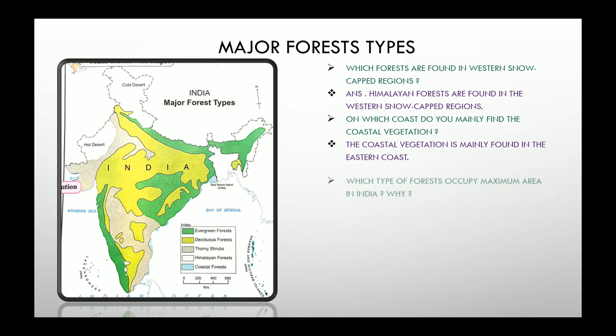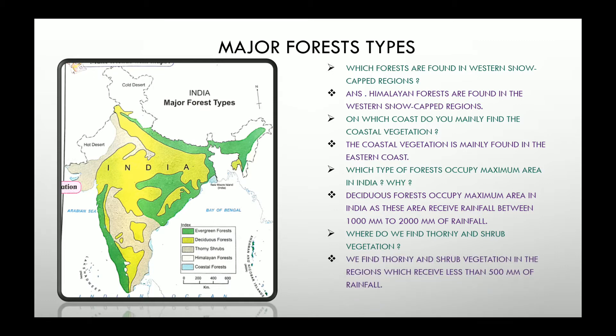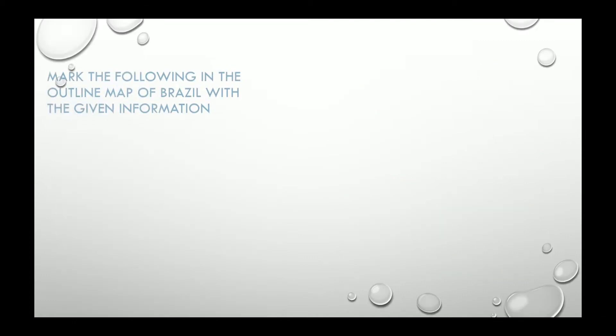So the coastal vegetation is mainly found in the eastern coast. Which type of forests occupy maximum area in India and what is the reason for that? The maximum area of the country is occupied by deciduous forests because it receives rainfall between 1000 millimeters to 2000 millimeters. Where do we find thorny and shrub vegetation? They are found in the area which receives less than 500 millimeters of rainfall, that is the rain shadow region.